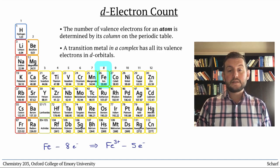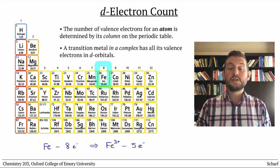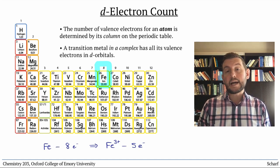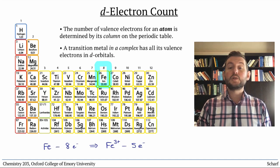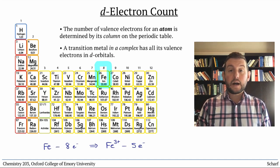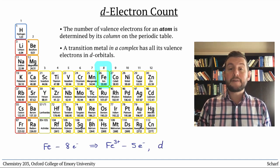The total number of valence electrons on a transition metal in a coordination complex is called its d electron count, or just d count, and is often labeled as a lowercase d with a superscript. So iron three is a d five ion.